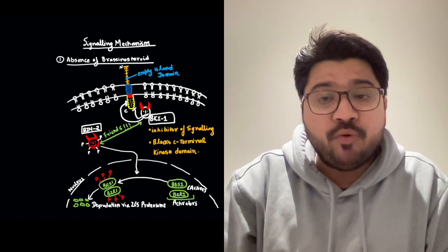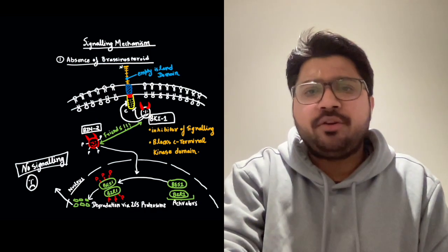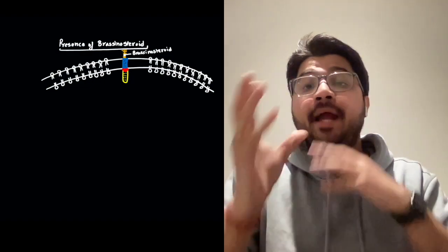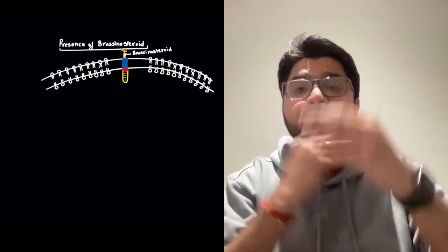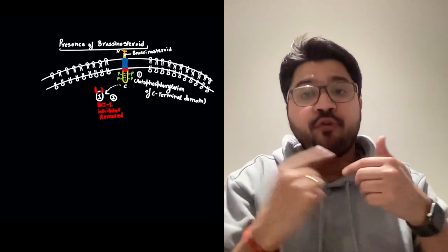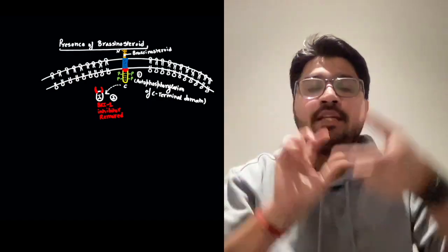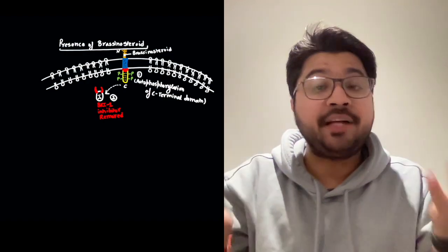Now let's understand how signaling is activated in the presence of brassinosteroid. When brassinosteroid binds to the island domain of the extracellular LRR region, it causes a conformational change in the receptor. This conformational change causes the kinase domain to autophosphorylate itself — step one. This autophosphorylation results in throwing away the BKI1 inhibitor from the C-terminal kinase domain.